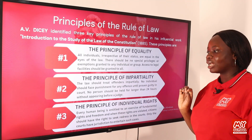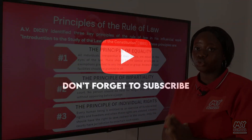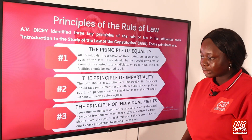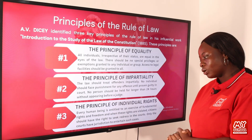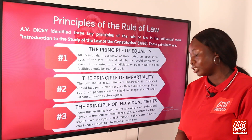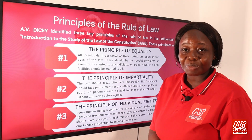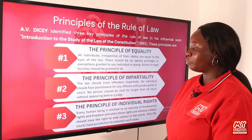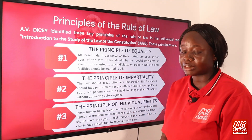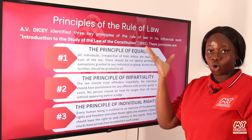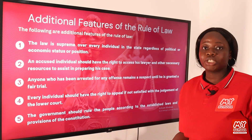The principle of impartiality states that the law should treat offenders impartially. No individual should face punishment for any offense until proven guilty in courts, and no person should be held for longer than 24 hours without appearing before a judge — this applies to everybody, regardless of status. The principle of individual rights states that every human being is entitled to exercise fundamental rights and freedoms, and when these rights are violated, citizens should have the right to seek redress in the courts, which have sole jurisdiction to entertain such cases.